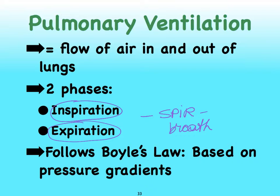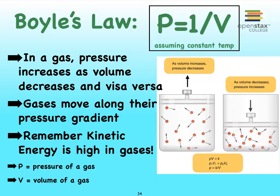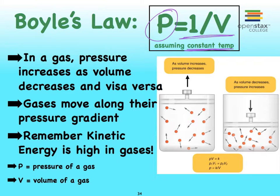The way we succeed in bringing air into the body and then pushing that air back out is by means of pressure gradients that follow Boyle's Law. Boyle's Law simply says the following: pressure is inversely related to volume of a gas. We need to add that we're keeping the temperature constant, and from now on please assume that whenever we're discussing these different pressure numbers, we're keeping the environmental temperature constant.